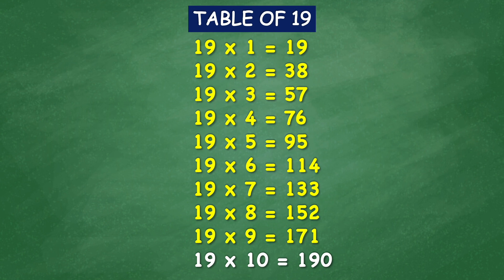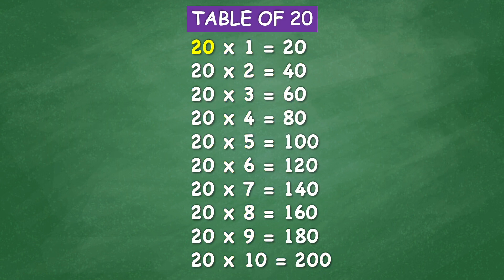19 times 10 equal 190. Table of 20: 20 times 1 equal 20, 20 times 2 equal 40, 20 times 3 equal 60, 20 times 4 equal 80, 20 times 5 equal 100, 20 times 6 equal 120, 20 times 7 equal 140, 20 times 8 equal 160, 20 times 9 equal 180, 20 times 10 equal 200.